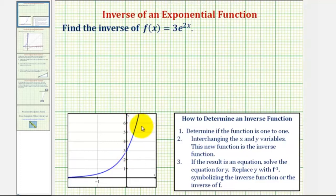Looking at our function here, notice how no horizontal line would ever intersect this graph in more than one point. And therefore, this function passes the horizontal line test and it's one-to-one, which means it does have an inverse function.